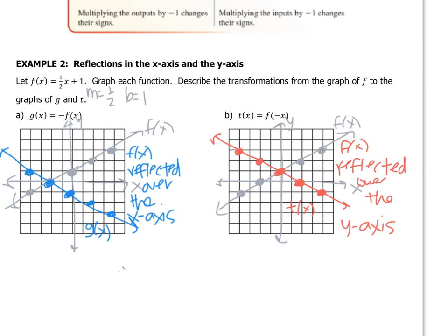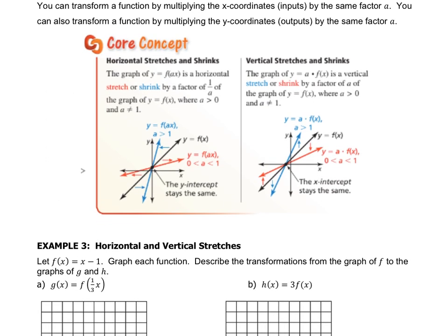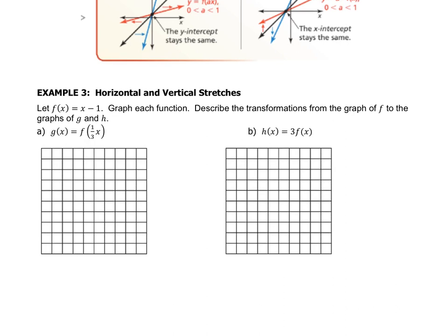There's one more type of transformation called a dilation. A dilation, when talking about graphs, is a stretch or a shrink — you multiply values. We can either make the line steeper or flatter, as you can see in the pictures: from the parent function, the black line, it either got steeper or a little flatter. Pause the video and graph f of x equals x minus 1 on both grids; m is 1 and b is negative 1.